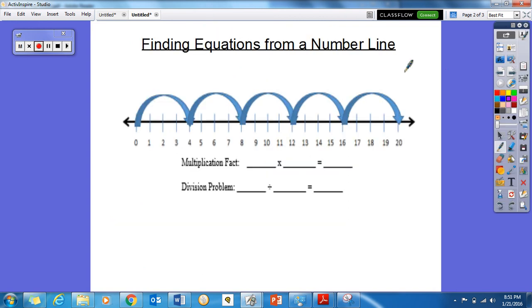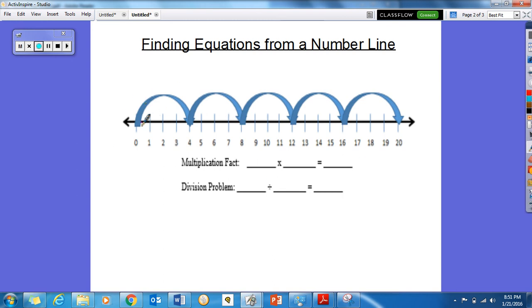Our first example is this number line right here. So let's find our multiplication fact first. Now, we see that we have 1, 2, 3, 4, 5 hops. And we're skip counting. Let's see. Here's 0, 4, 8, 12, 16, and 20.